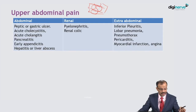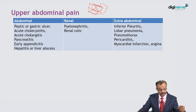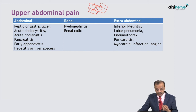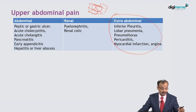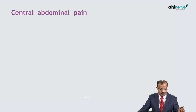Classification by region: upper abdomen — peptic ulcer perforation, acute cholecystitis, acute cholangitis, pancreatitis, early appendicitis, hepatitis, liver abscess may present with epigastric pain. Also important: pyelonephritis, renal colic, inferior pleuritis, lobar pneumonia, pneumothorax, pericarditis, myocardial infarction, angina — all can cause upper abdominal pain. Missing angina and treating it as acute abdomen is really dangerous; you may lose the patient. Central abdomen: early appendicitis initially presents centrally.